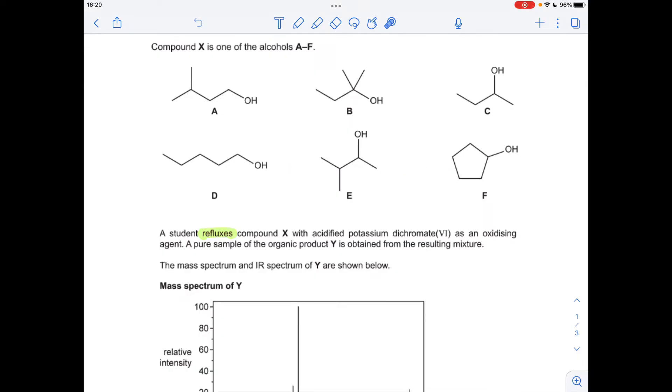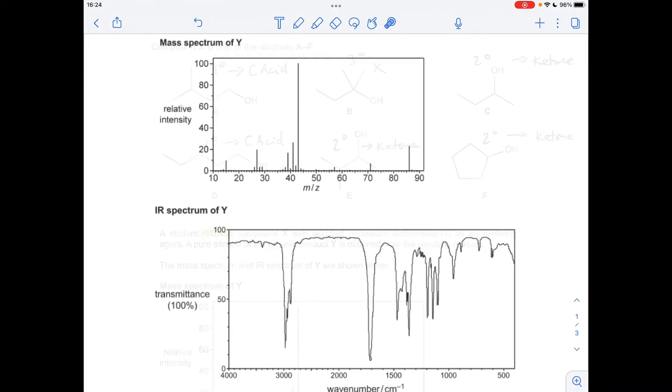The first thing we need to do is ask ourselves what kind of alcohols have we got. Now we've established whether the alcohols are primary, secondary, or tertiary. We now need to think what would this alcohol give when refluxed with the oxidizing agent. The primary alcohols would both generate carboxylic acids when refluxed with the oxidizing agent. Tertiary alcohols can't be oxidized and the secondary alcohols would all make ketones.